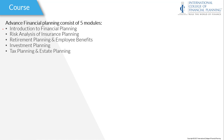The first module is Introduction to Financial Planning, which we call ITFP. The second module is Risk Analysis and Insurance Planning, i.e. RAIP. The third module is Retirement Planning and Employee Benefits, i.e. RPEB. The fourth module is Investment Planning, i.e. IP. And the last module is Tax Planning and Estate Planning, which we call TPEP. So before appearing for this exam, we need to clear the concepts of all modules.